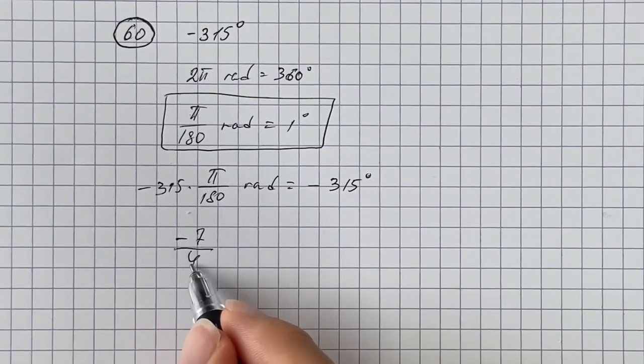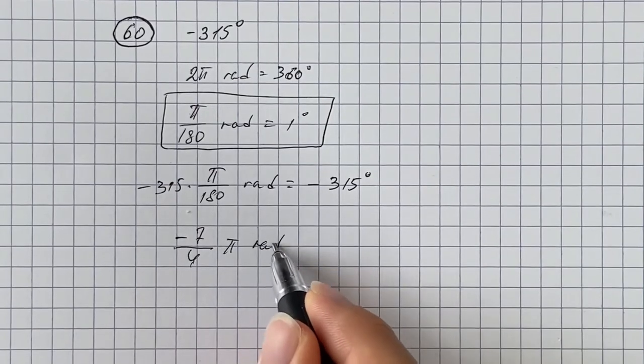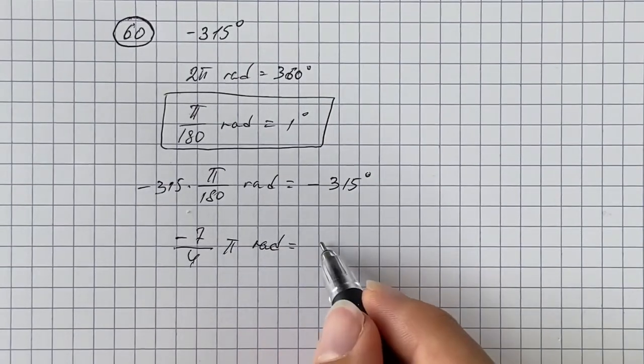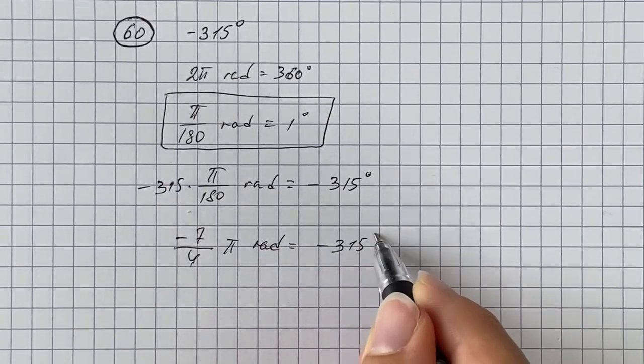So that's going to be negative 7 over 4 pi radians, which is the same thing as negative 315 degrees.